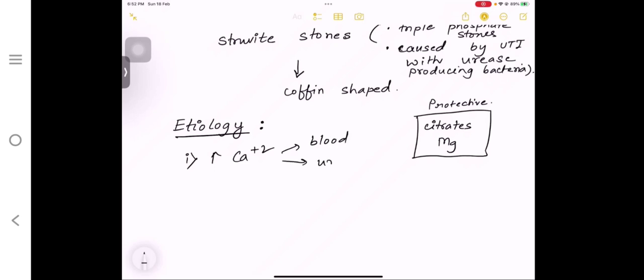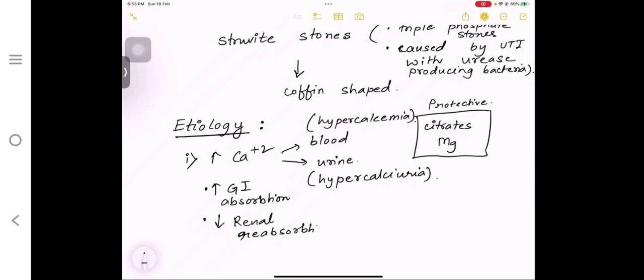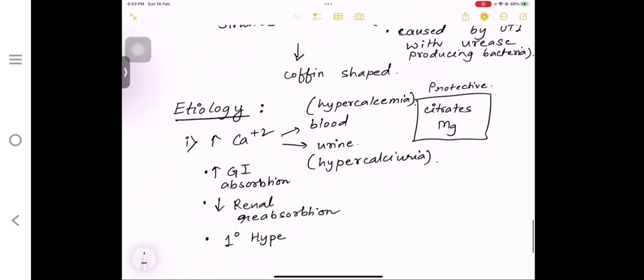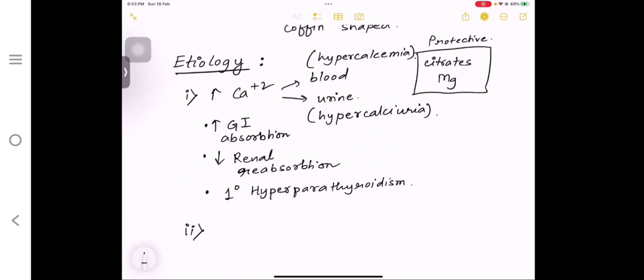What are the risk factors? If there is more calcium in the body or in the blood or in the urine—this happens if there is increased GI absorption, if there is decreased kidney reabsorption, and if there is increased primary hyperparathyroidism. PTH hormone takes calcium from bone and puts it into blood.